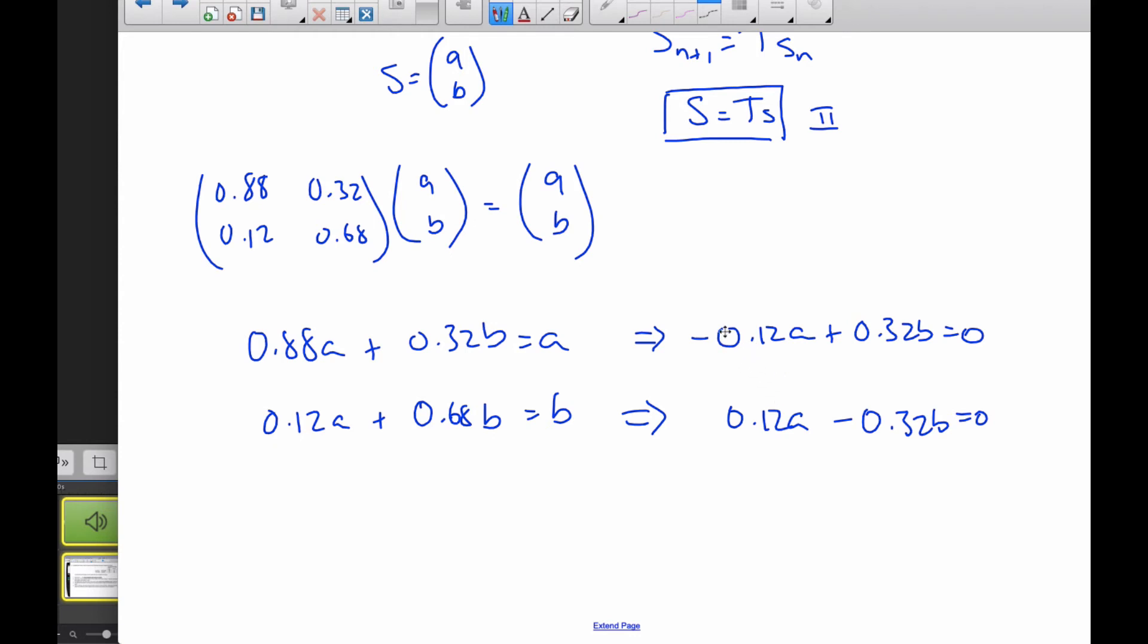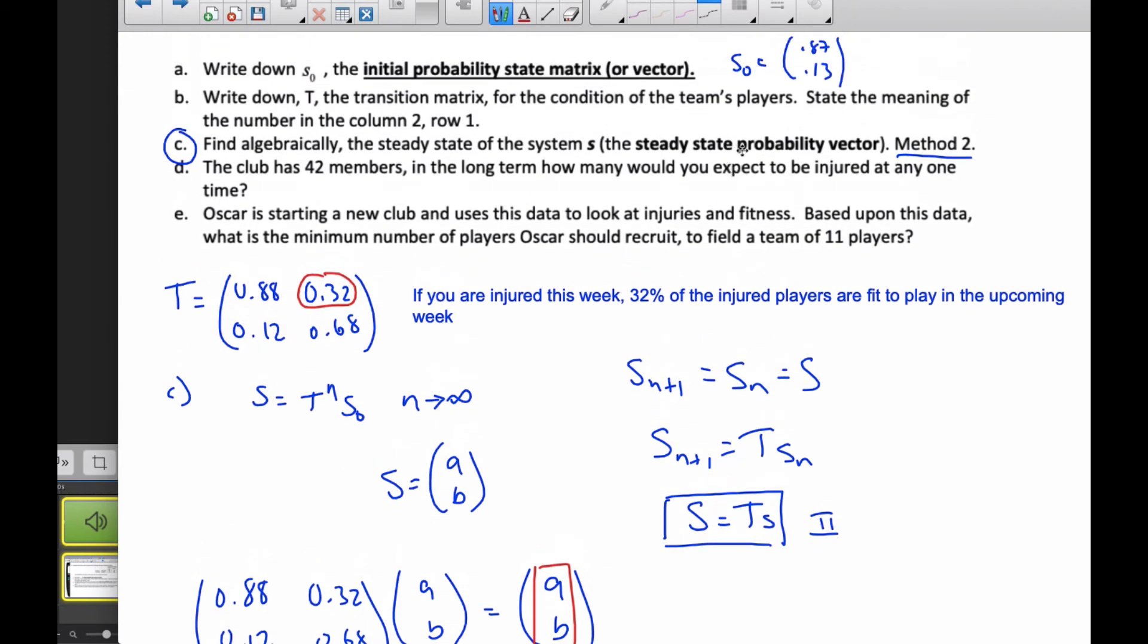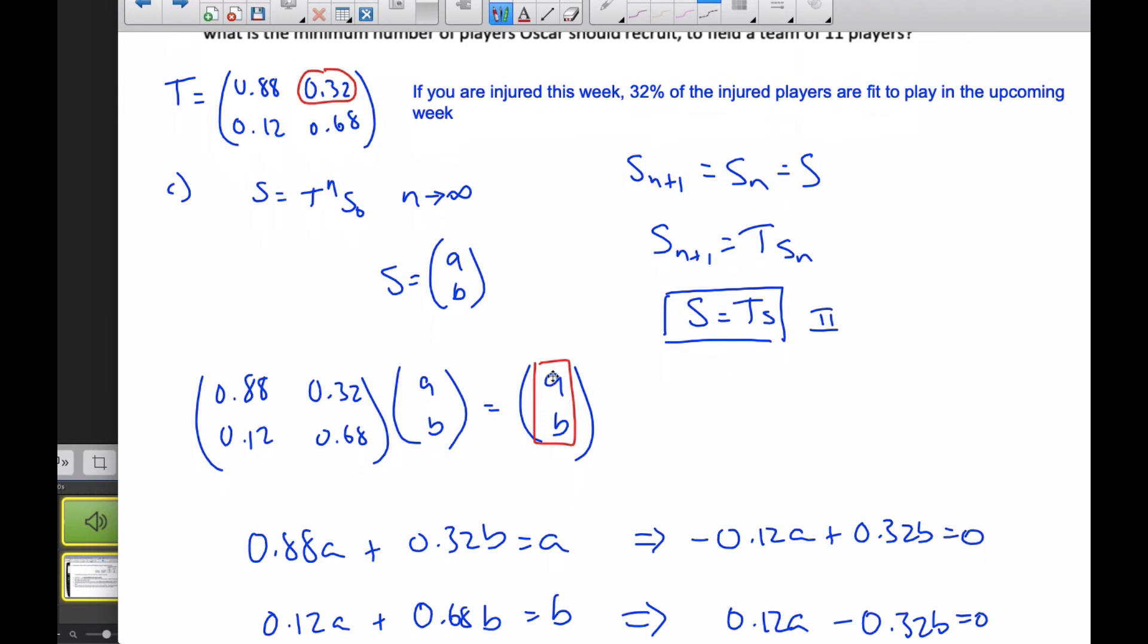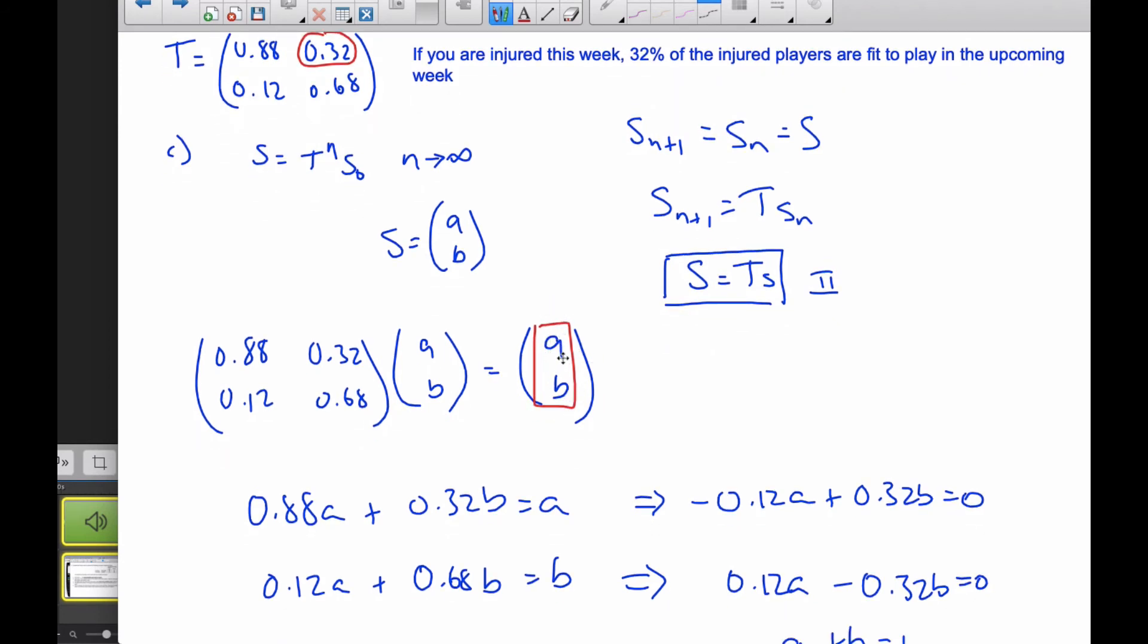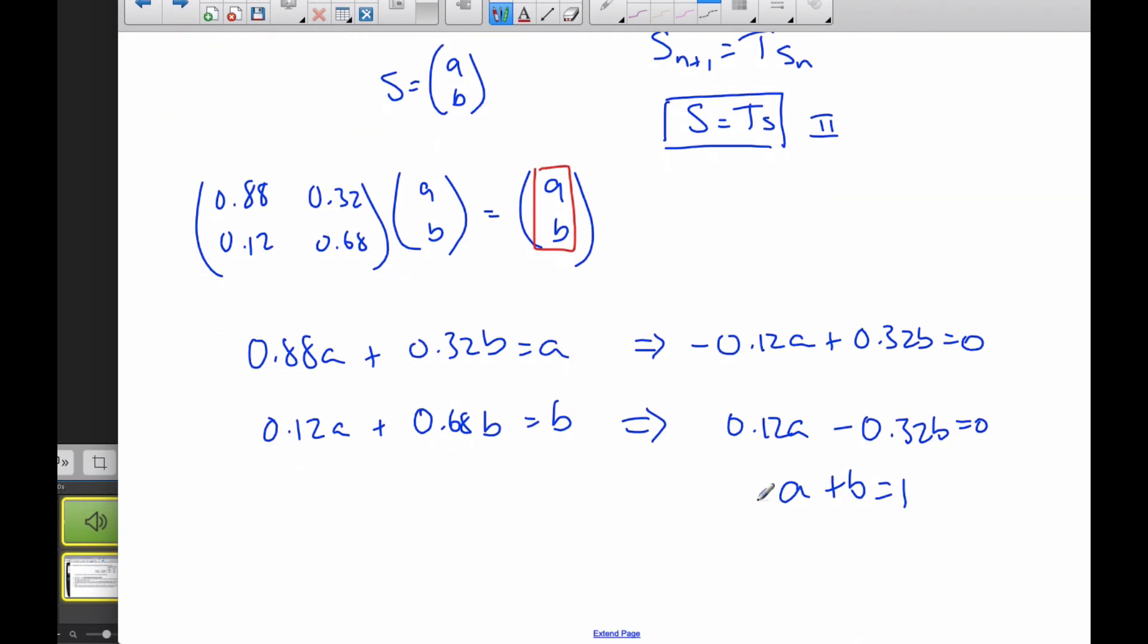So I actually only have one equation, two variables. I need another one. What I do know is that this vector is a probability vector, so I know the sum of this has to be 1. So A plus B equals 1. And for this particular example, we're doing a probability vector. But if I was told that the total were 120 players, let's say, then I know that they would add up to 120, and I can get A and B in that perspective as well.